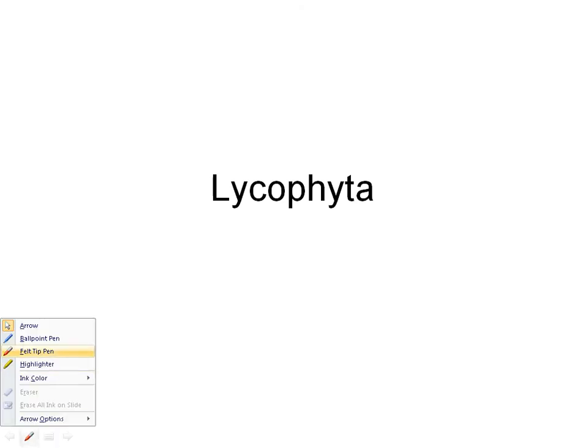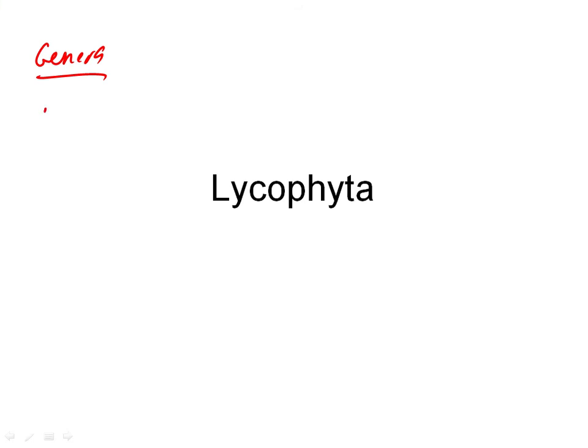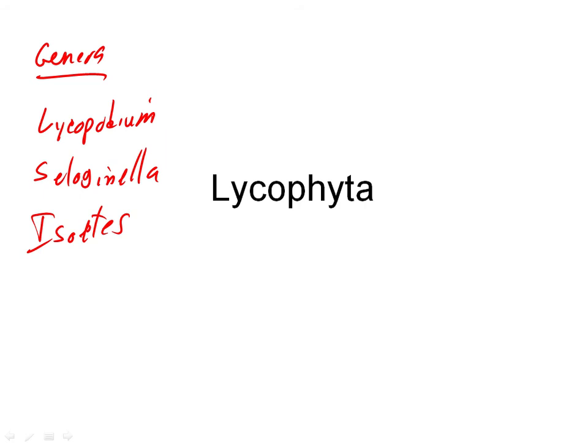Our new group for today is the Lycophyta, our first division of the land plants. I've added a couple extra slides to the presentation today, but they're only placeholders — blank slides with one word indicating we're going to talk about a new genus. The Lycophyta is a division of three genera: Lycopodium, Selaginella, and Isoetes. We're going to learn a little bit about all of them.